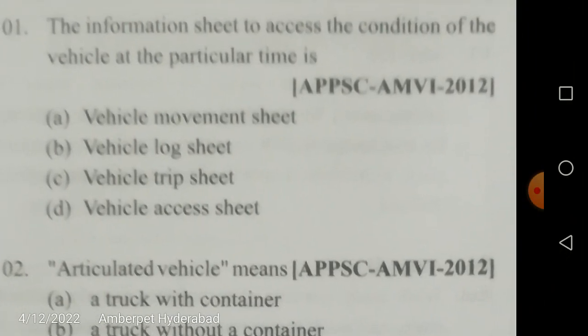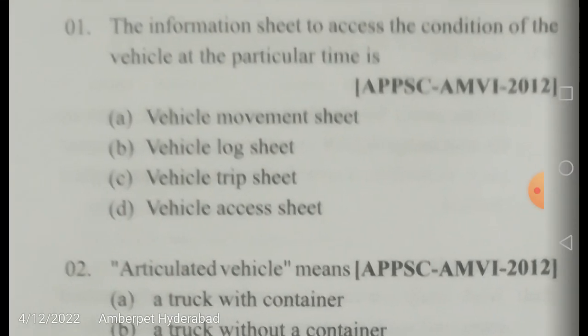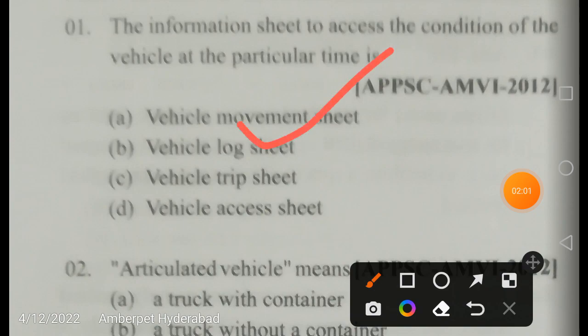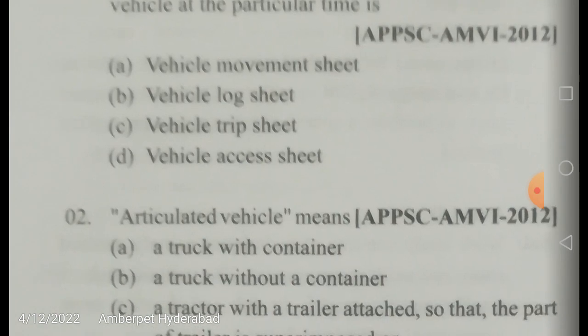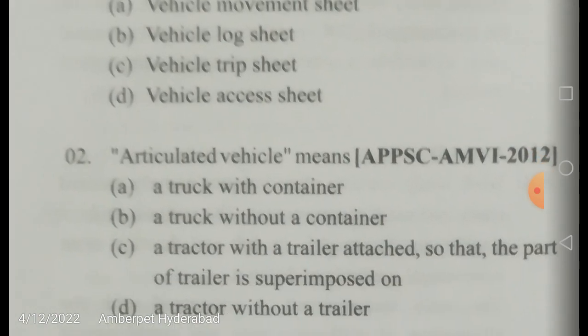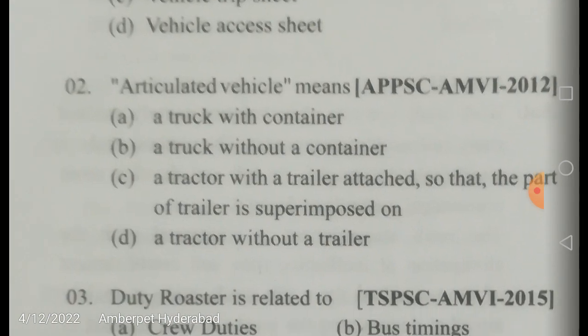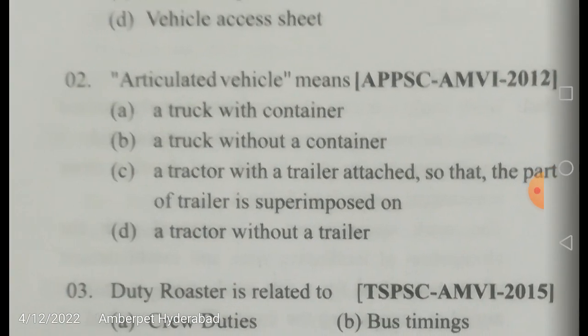The information sheet used to access the condition of the vehicle at a particular time is the vehicle log sheet — commonly used by conductors, drivers, and lorry drivers. An articulated vehicle means a tractor with a trailer attached, so that part of the trailer is superimposed on the tractor.